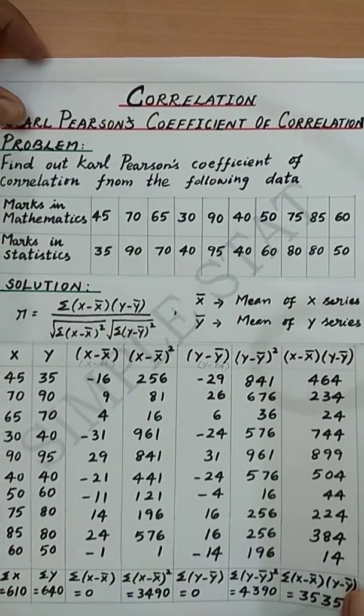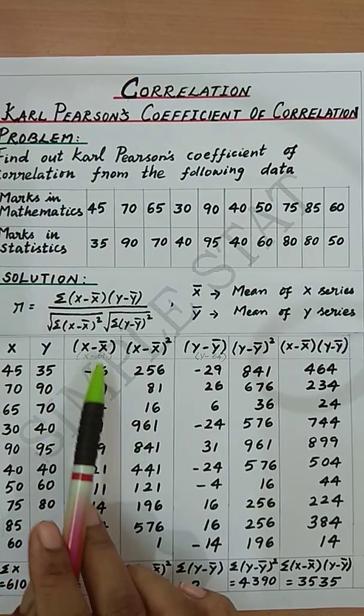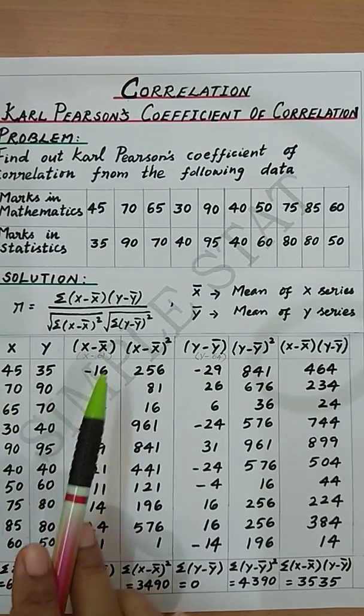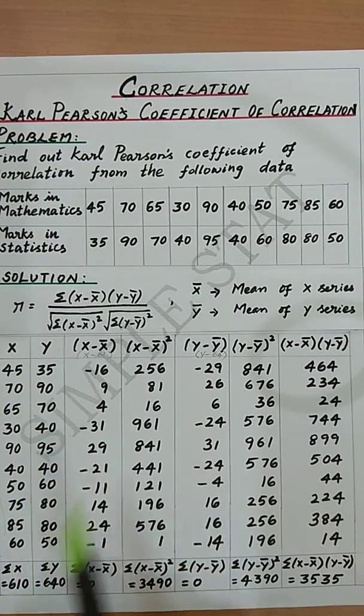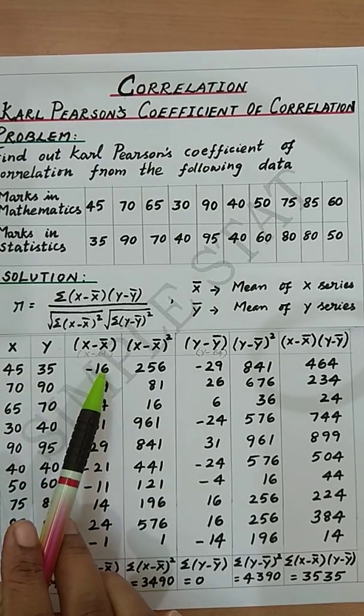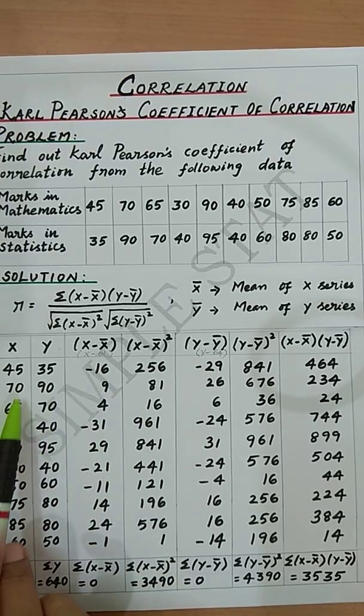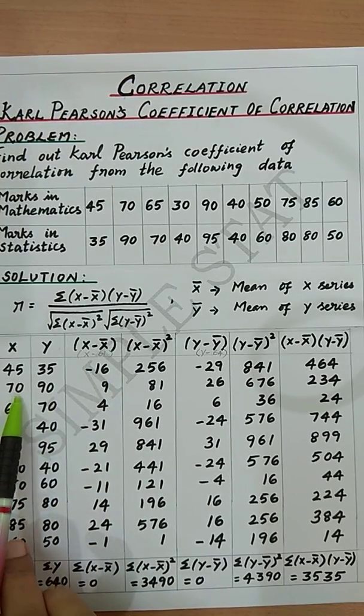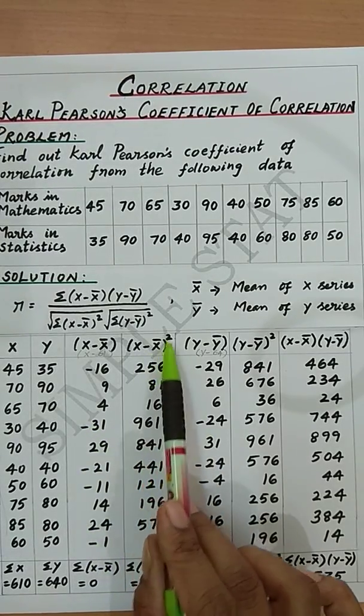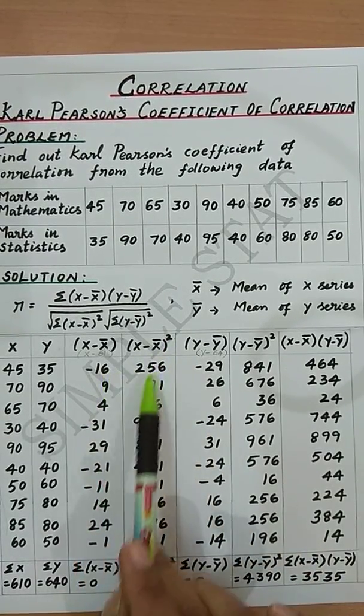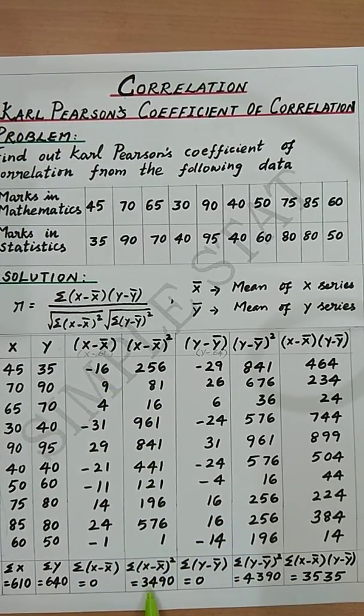Now let's complete the remaining calculations. First find out x minus x bar which is nothing but x minus 61. That is, we have to subtract each and every value under the variable x from 61. Now the first value will be 45 minus 61 will give you minus 16. Next 70 minus 61 will give you 9, etc. and find its total. Now proceed with x minus x bar whole square which is 16 square, 9 square, etc. and find its total. Therefore we get summation (x minus x bar) whole square as 3490.